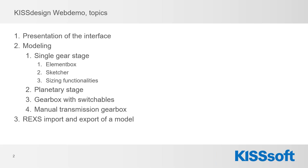We'll use first the element box, then the sketcher, which is a quite useful tool for building up models. Then I'd like to look at the different sizing functionalities in the software, and then continue building up the planetary stage to show the possibilities there — using the sketcher again to show how fast and simple it is.